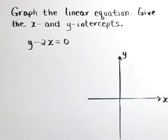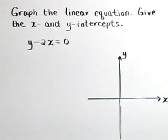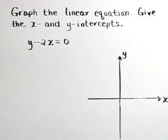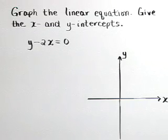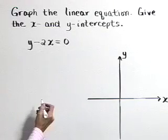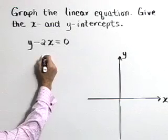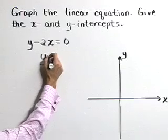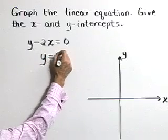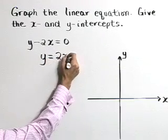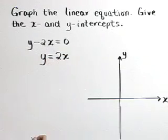Graph the linear equation and give the x and y intercepts. The linear equation is y minus 2x is equal to zero. I'd like to go ahead and solve for y in this equation and write it as y is equal to 2x.